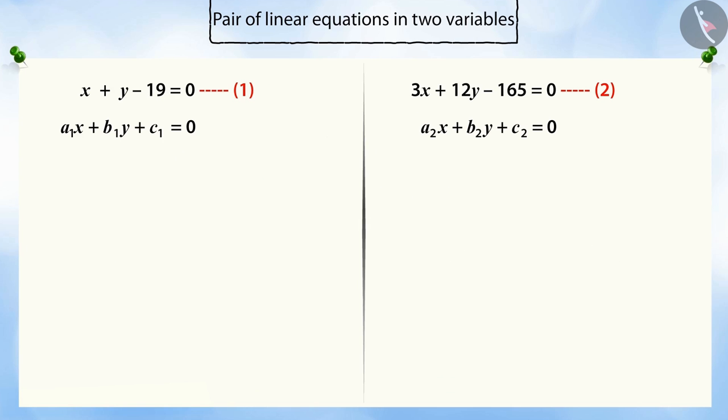So, if we look at these two equations, these include a1 is equal to 1, b1 is 1 and c1 is minus 19, and a2 is equal to 3, b2 is 12 and c2 is minus 165.